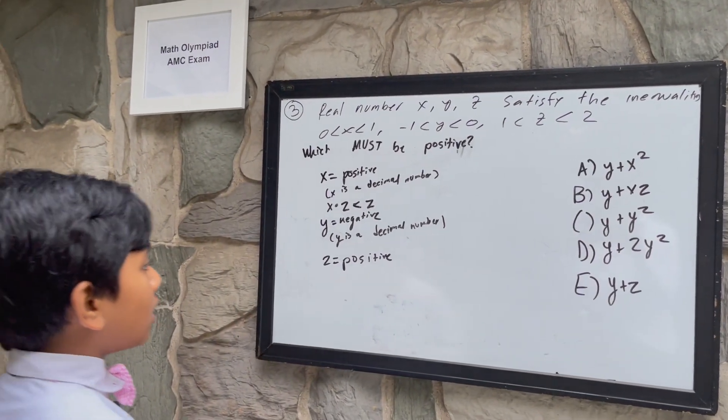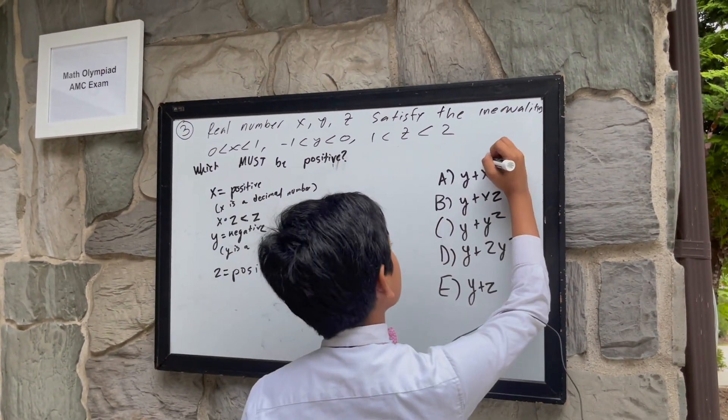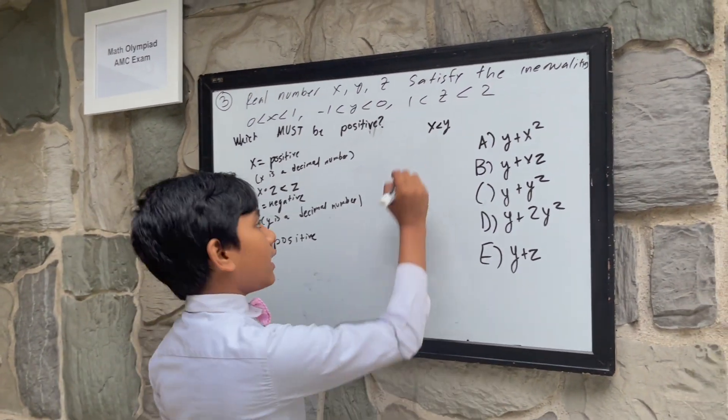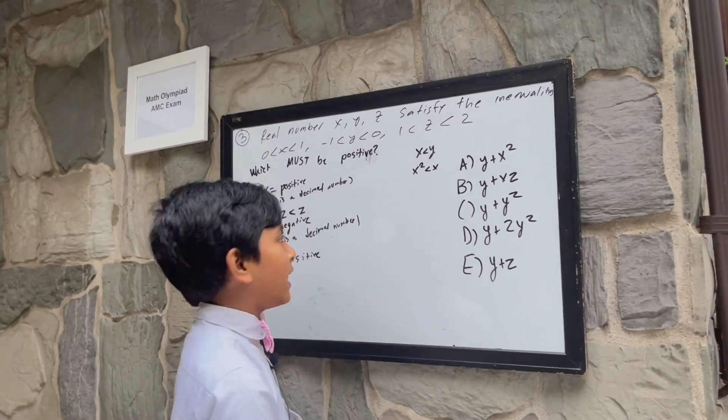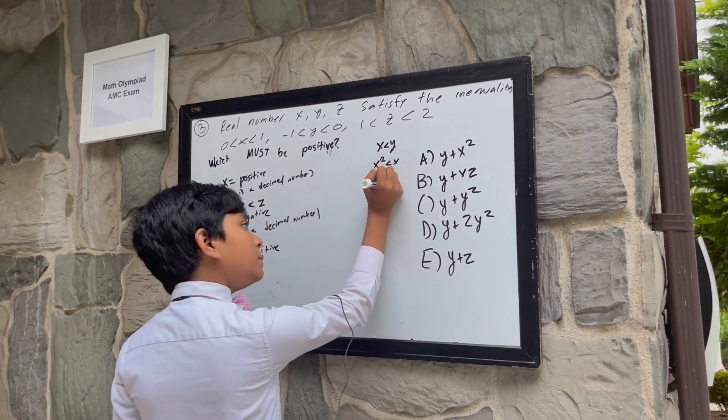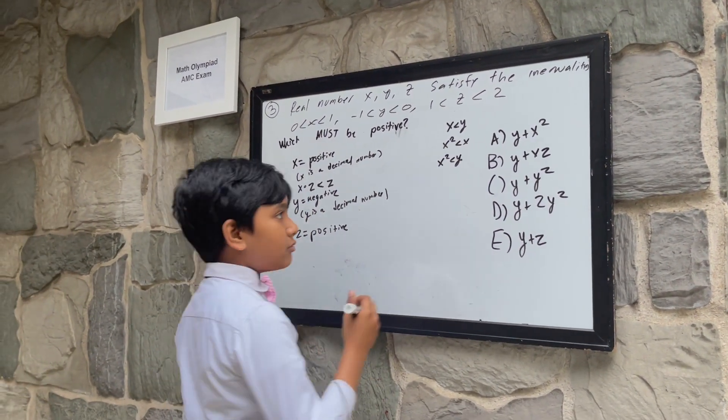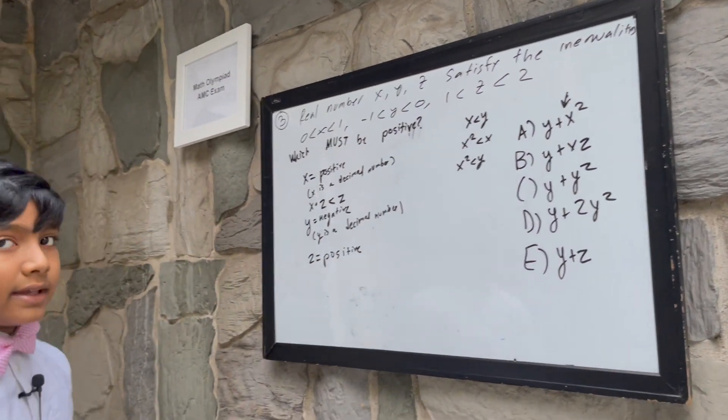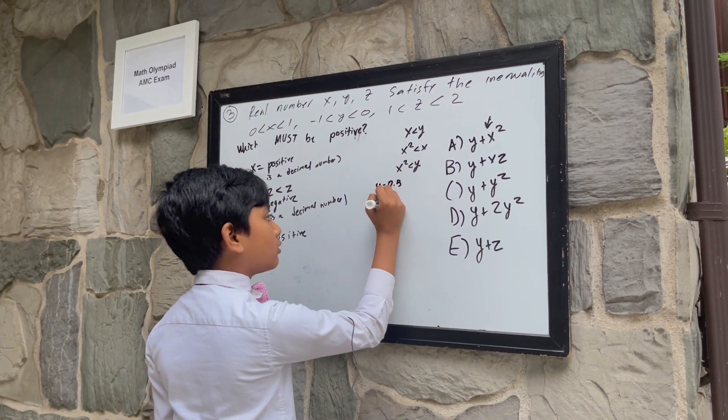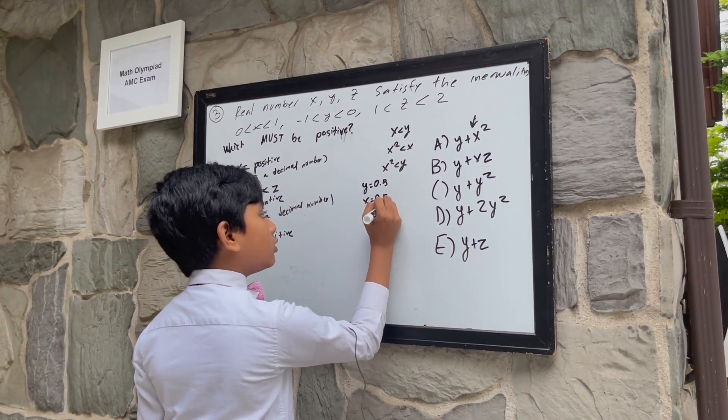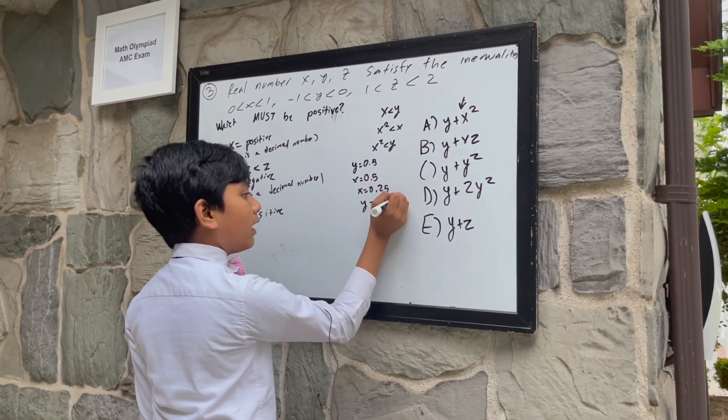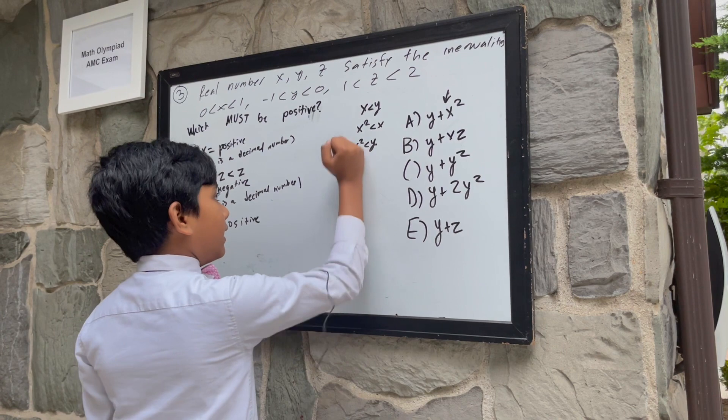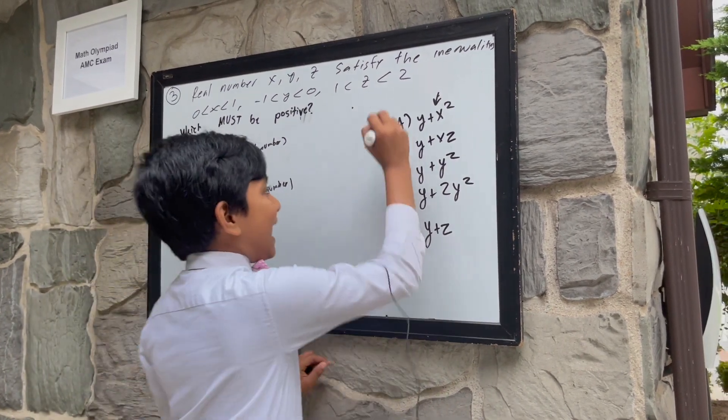Which must be positive? y plus x squared. Well, thing is, x could always be less than y, and x squared is less than x. It must be less than x. So that means that x squared could be less than y. That would mean that this doesn't have to be positive. For example, say we have a situation where y is negative 0.5 and x is 0.5. x squared would be 0.25 and y would be negative 0.5. So that means you have negative 0.5 plus 0.25, which is negative 0.25. That means we are out of the question here.